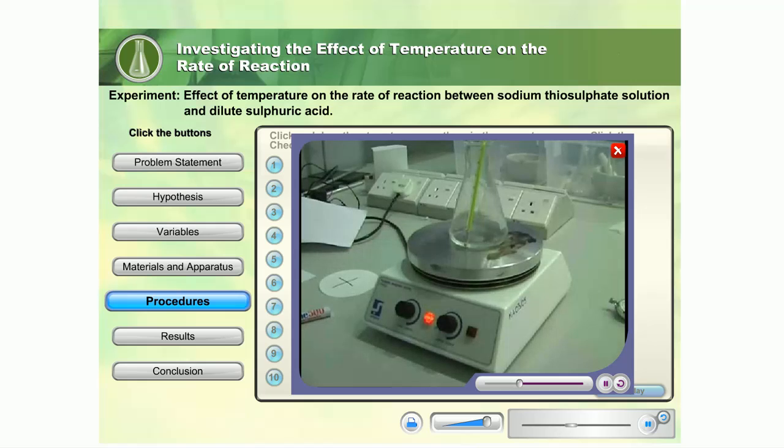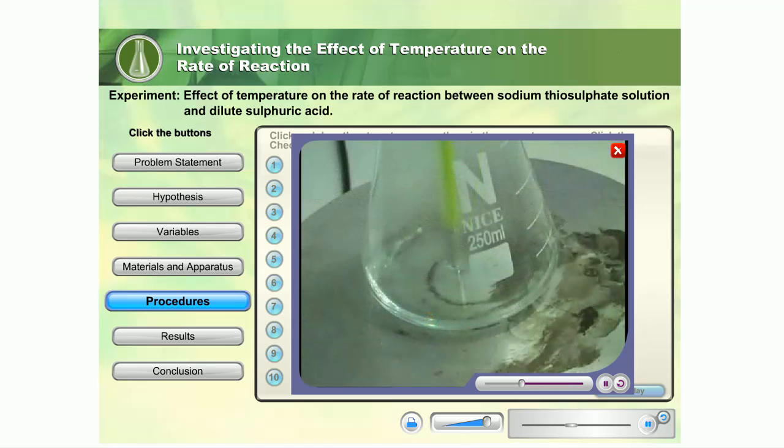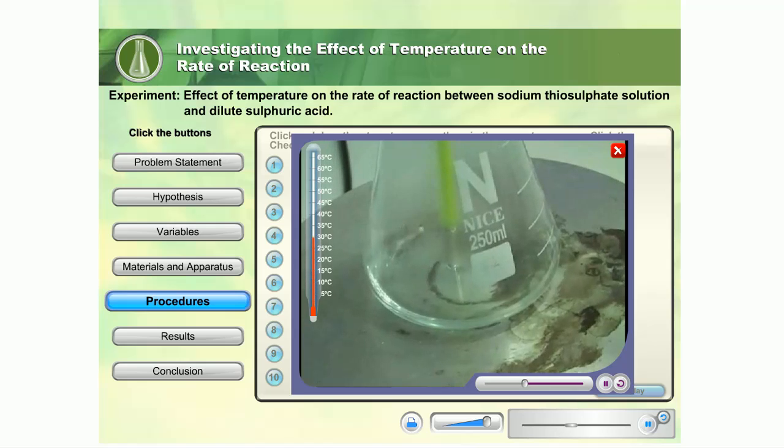Heat the conical flask to 30 degrees Celsius. Measure the temperature of the solution with a thermometer. Record the temperature reading.